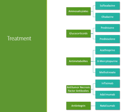The drug classes used to treat inflammatory bowel disease include: aminosalicylates (sulfasalazine and olsalazine); glucocorticoids (prednisone and prednisolone); antimetabolites — drugs typically used for cancer but effective here — including azathioprine, 6-mercaptopurine, and methotrexate; anti-tumor necrosis factor antibodies, which target specific inflammatory sites — including infliximab and adalimumab; and integrins, including natalizumab.